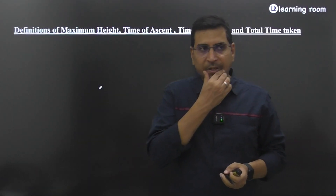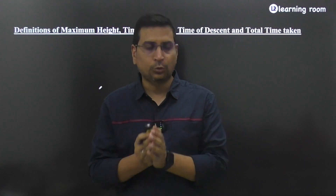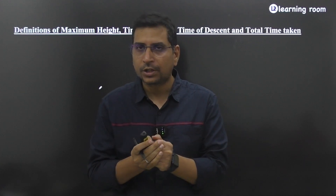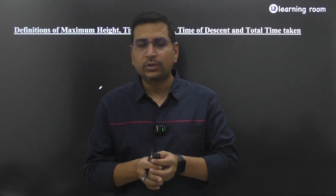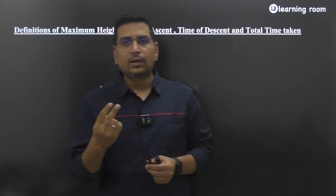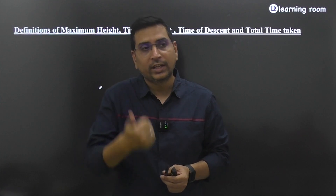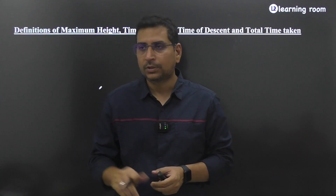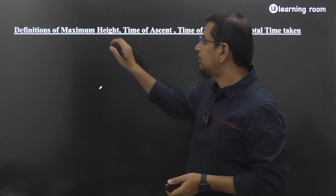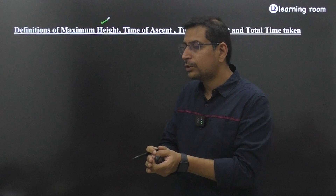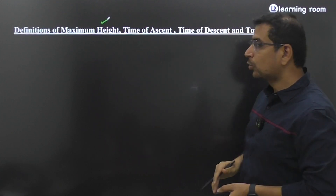When an object is moving under the influence of gravity, there are certain terms associated with it. For general communication it is important to understand what those terms actually mean. We are going to see two things: first, understand the definitions of those terms; second, derive the mathematical value of those terms. The terms we will cover are maximum height, time of ascent, time of descent, and total time taken.